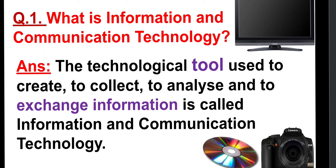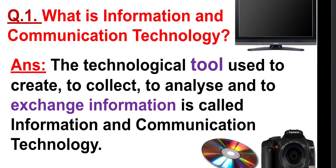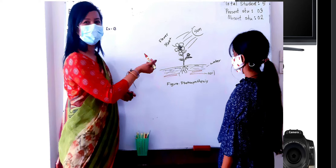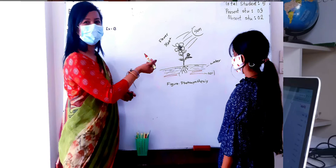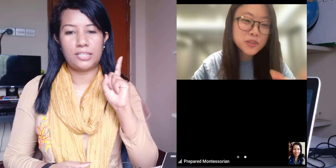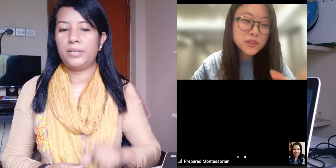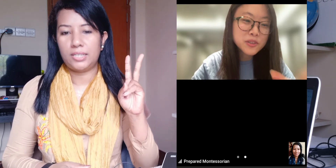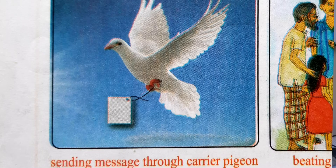Information and communication technology — ICT — can be largely classified into two groups: number one, technology for communication with people, and number two, technology for recording information.